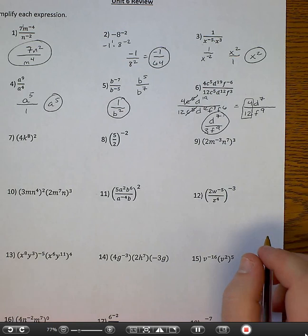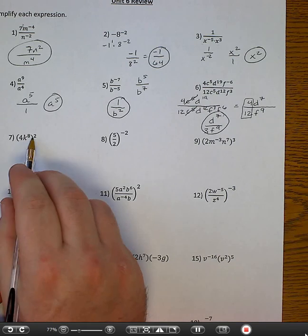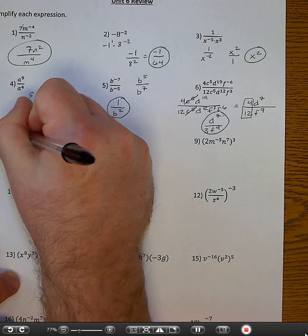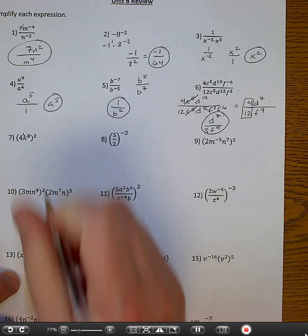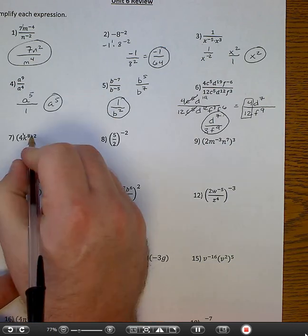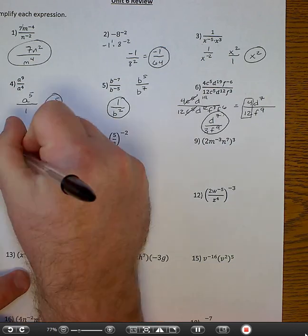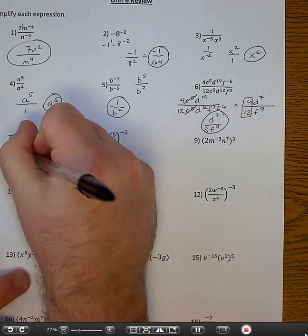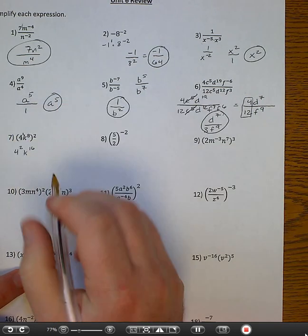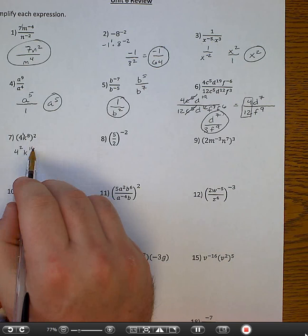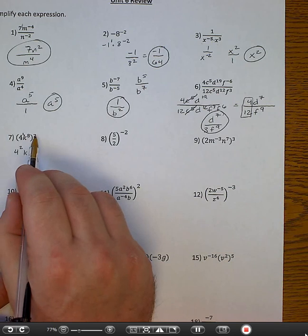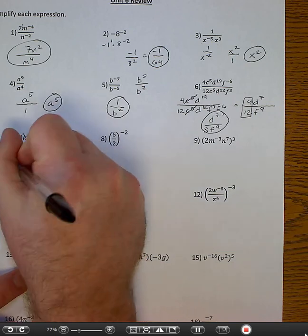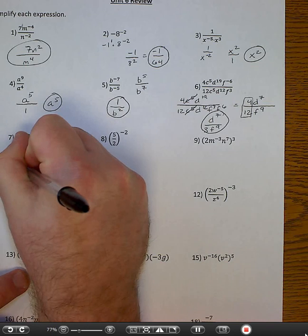Number seven. Everything inside the parentheses is getting squared, so I'm going to put an exponent here on that four. I'm just going to multiply each exponent by two: four squared, k to the sixteenth. Eight times two — not eight squared, eight times two. And now I'm going to do four squared, which is 16, k to the sixteenth.